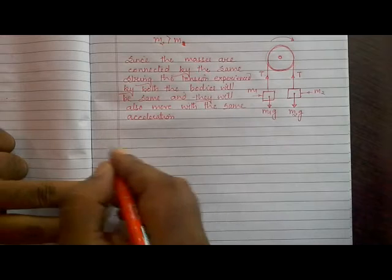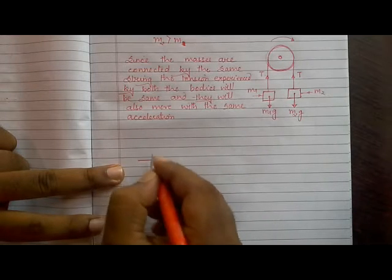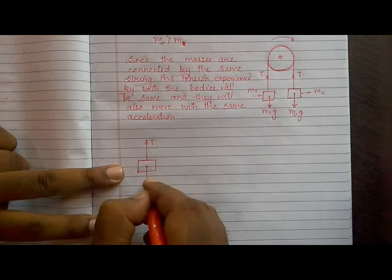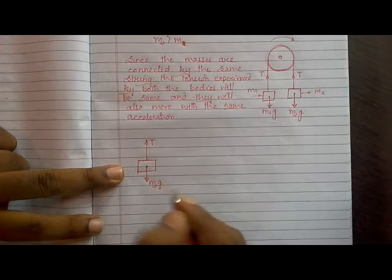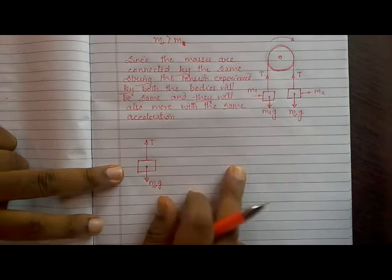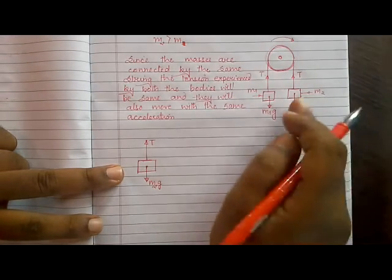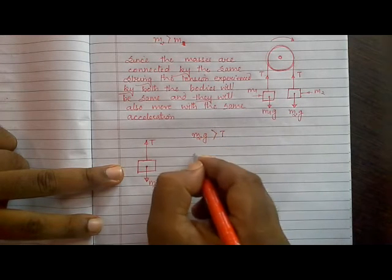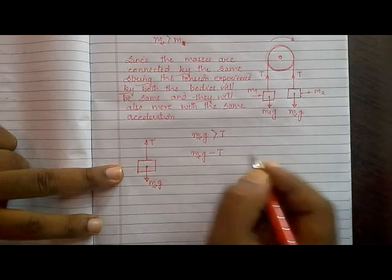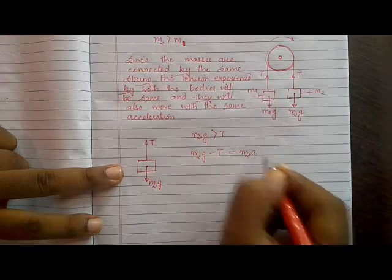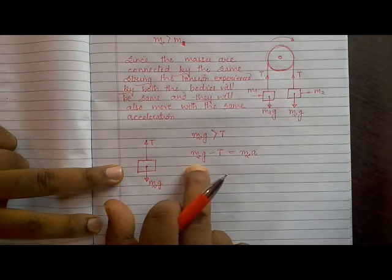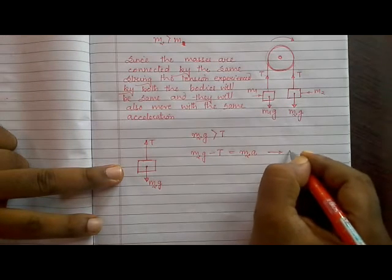Now let us draw a free body diagram for mass m2 with the different forces acting on it. We have tension acting upward and m2g acting downward. Since m2 is moving downward, m2g is greater than T, so we can write: m2g minus T equals m2a. Let us call this Equation 1.